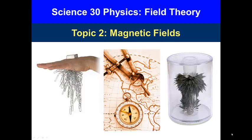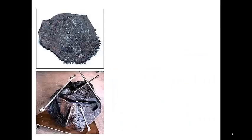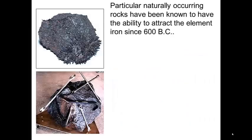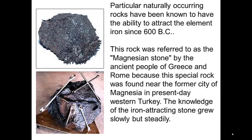Hello and welcome to Part 2 of Topic 2, Magnetic and Electric Fields. Particular naturally occurring rocks have been known to have the ability to attract the element iron since about 600 BC. This rock was referred to as Magnesian stone by the ancient people of Greece and Rome because it was found near the former city of Magnesia in present-day western Turkey. The knowledge of the iron-attracting stone grew slowly but steadily.